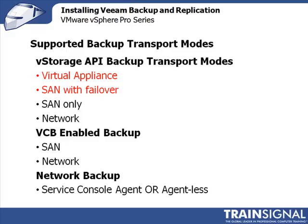The second section is VCB-enabled backup. VCB is VMware's Consolidated Backup — a series of command-line options that, when installed, create a VCB proxy. You install Veeam Backup on that VCB proxy server, which has direct SAN or network access to back up the virtual infrastructure. The next section is network backup, not using the vStorage API. With network backup, you can use either the service console agent or go agentless. A Veeam Backup agent is installed on the fly during backup on the ESX server, then removed along with sudo file and firewall rule changes when the backup completes.